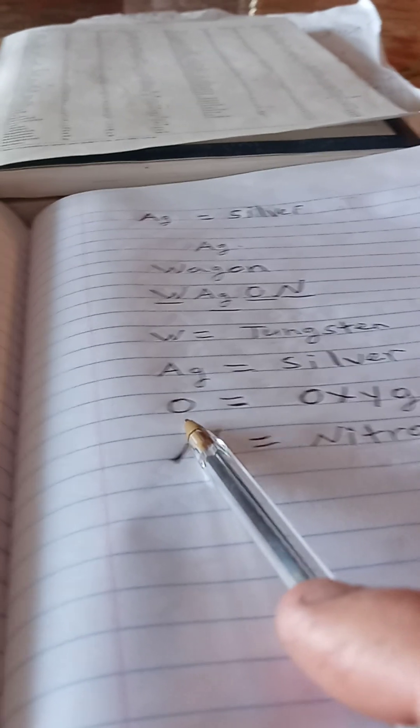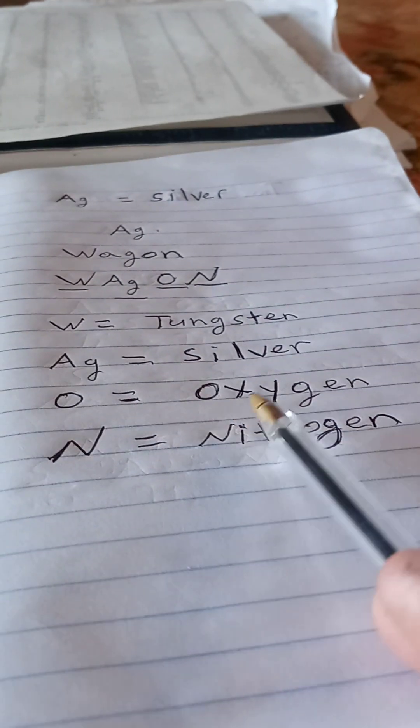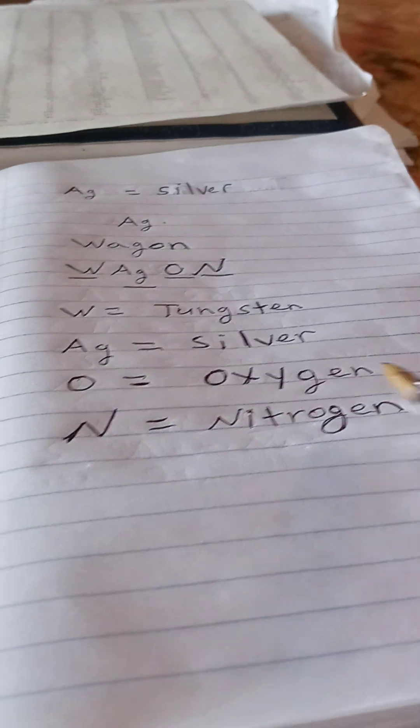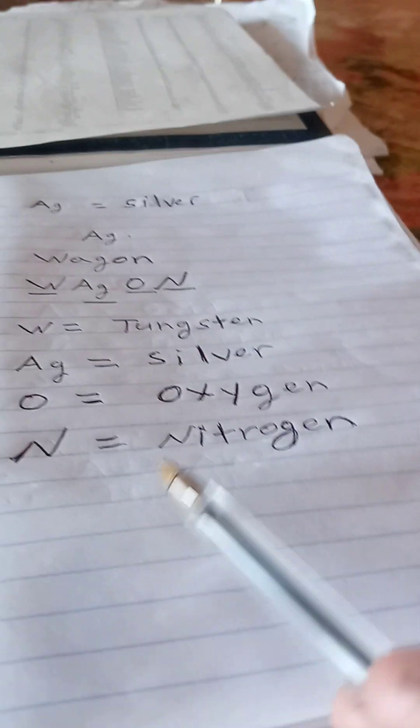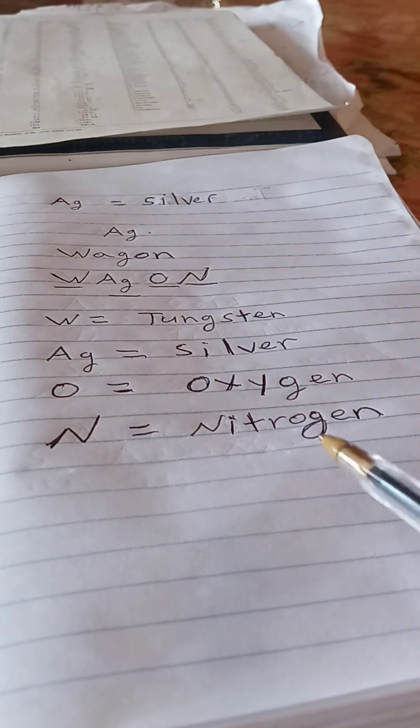Capital N is for nitrogen, N-I-T-R-O-G-E-N. And you got wagon.